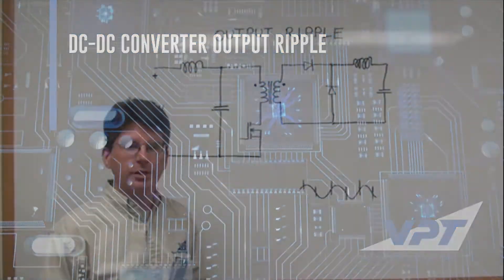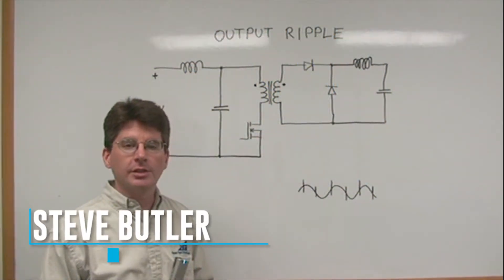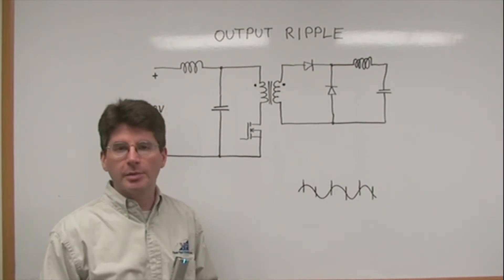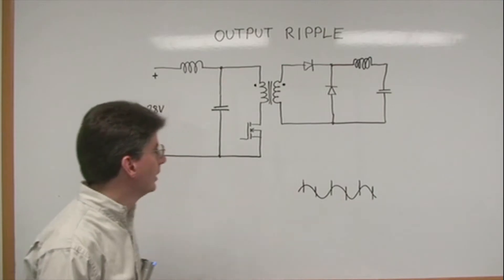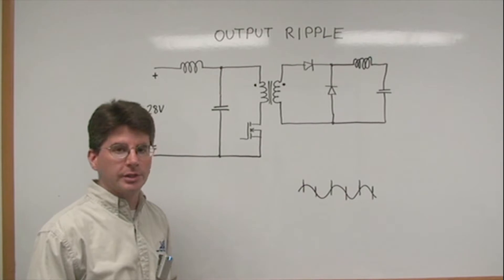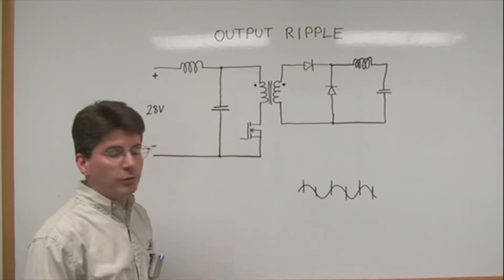I'm Steve Butler. Today we'll be discussing DC-DC converter output ripple, its characteristics, and how it may be reduced. This is a basic diagram of a switching topology we use in our DC-DC converters. This is a forward topology.